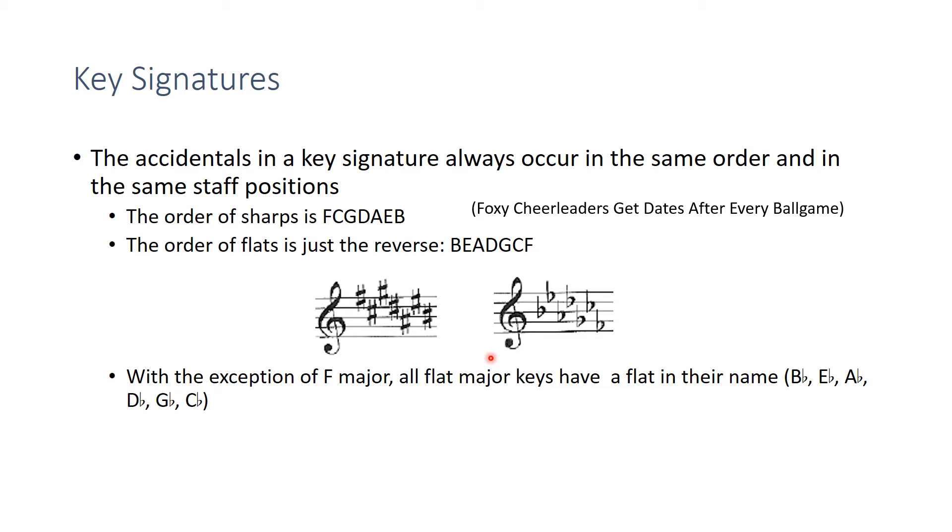F major is the exception. F major has one flat in the key signature but doesn't have a flat in the name. All of the other keys, with the exception of C major which has no sharps or flats, all of the other keys are going to be sharp keys: G, D, A, E, B, F sharp, and C sharp. Those are sharp keys. They'll have sharps in the key signature.